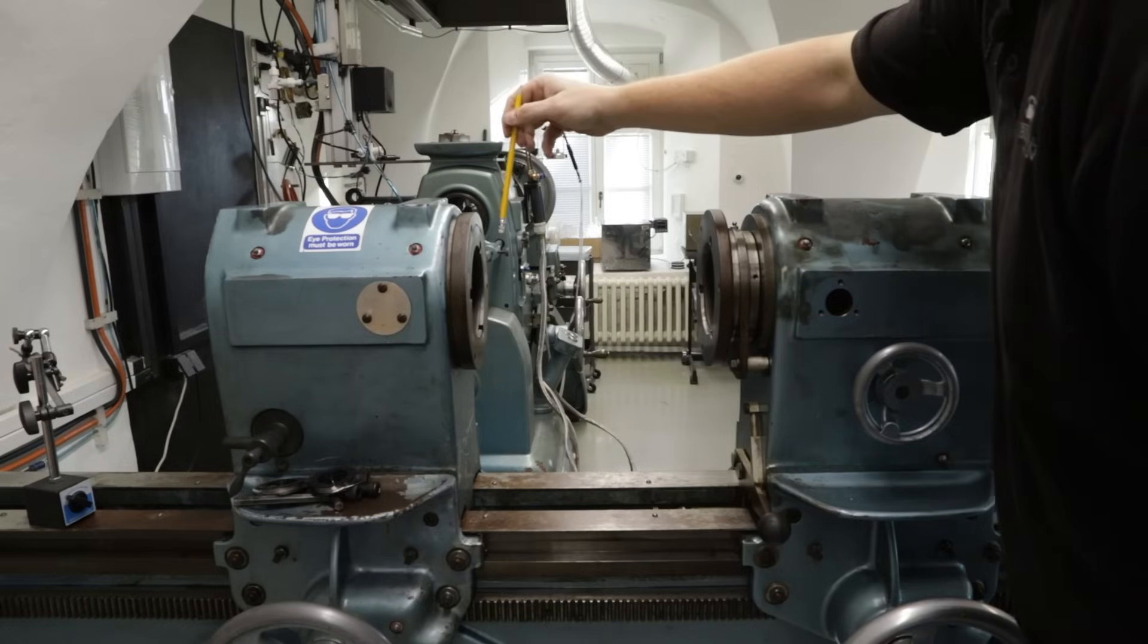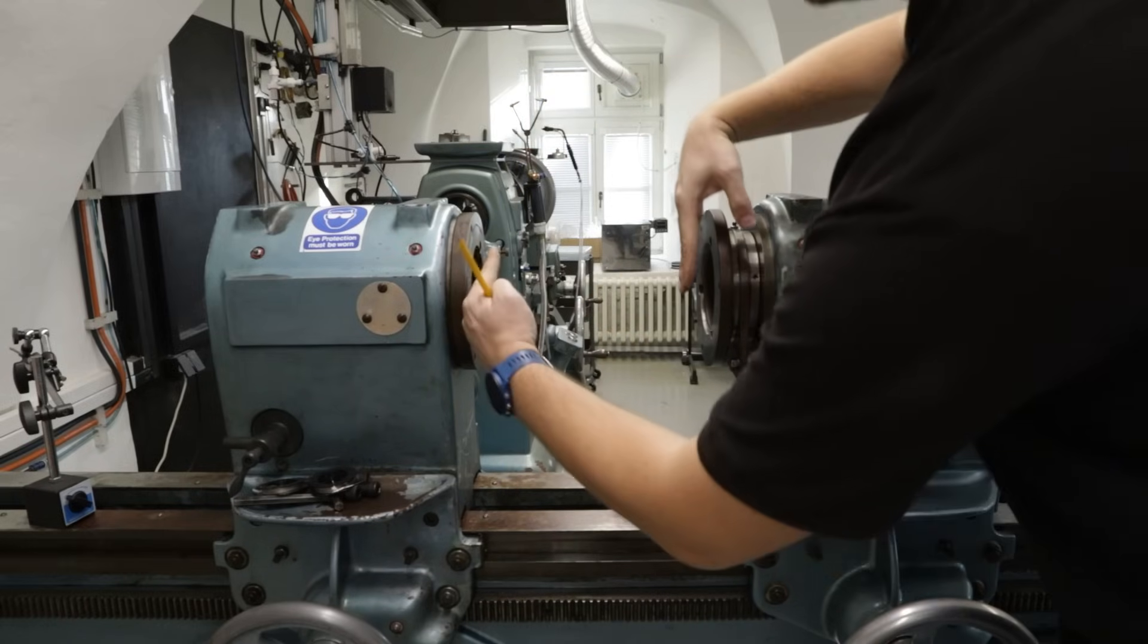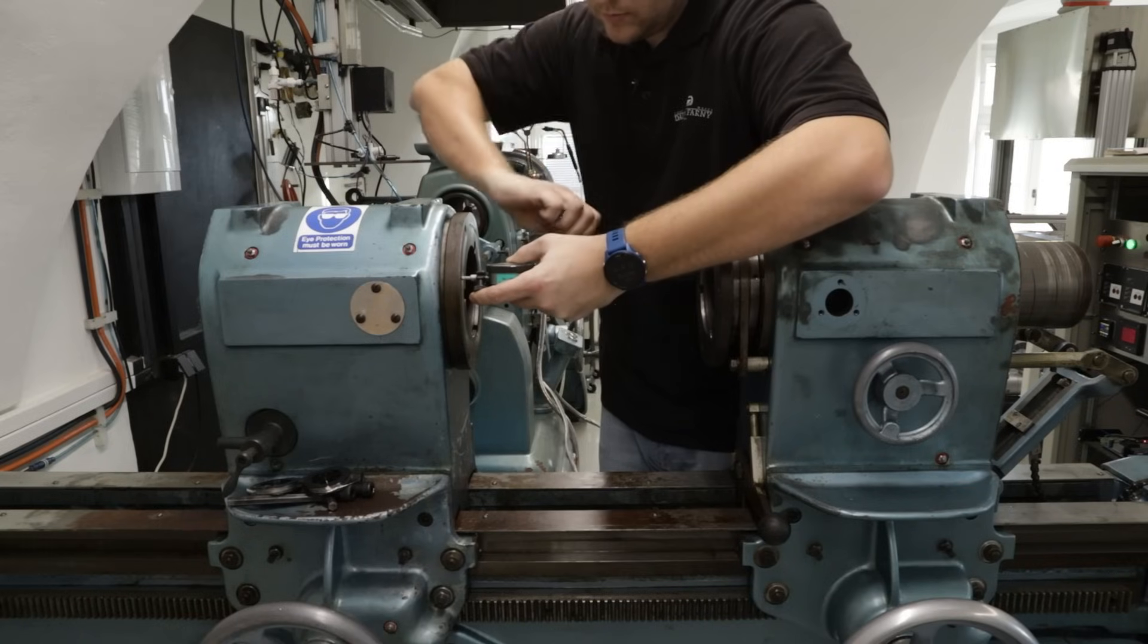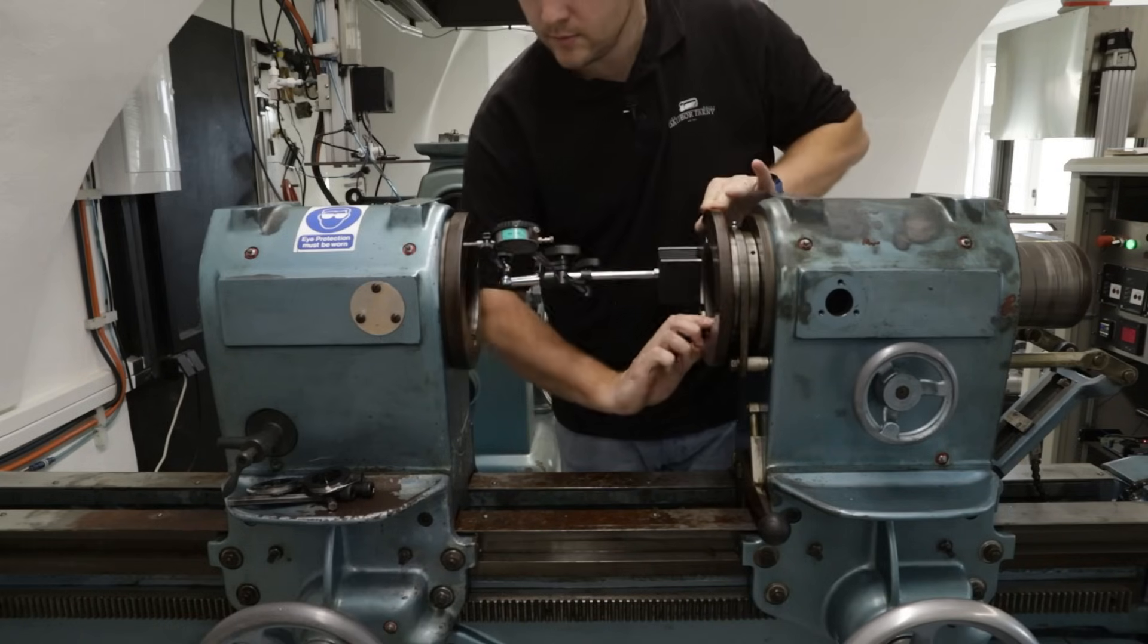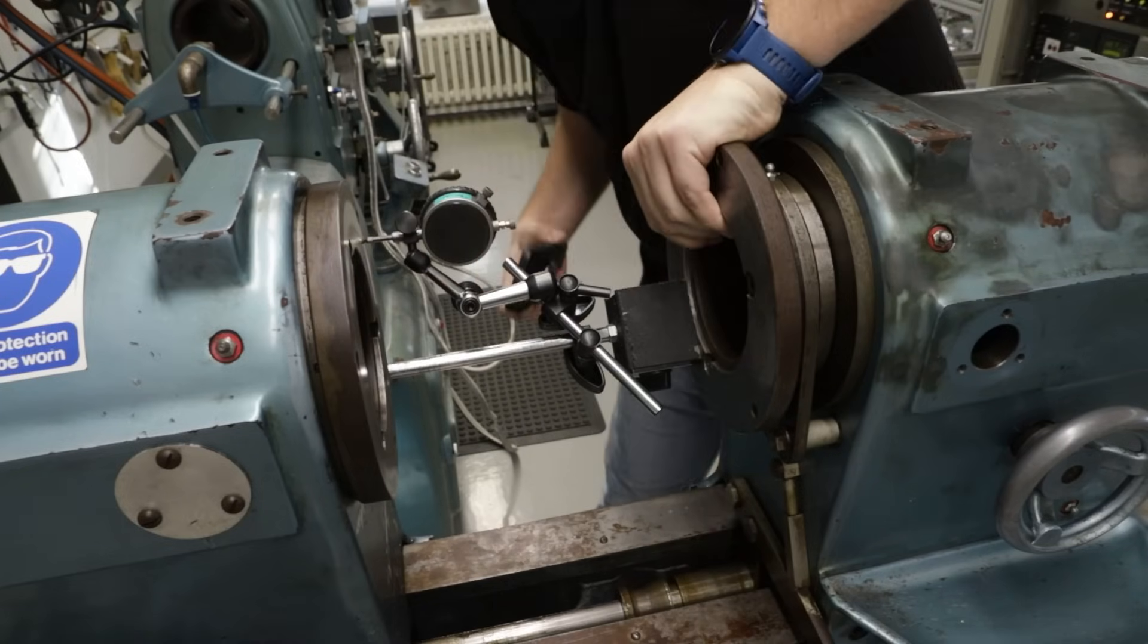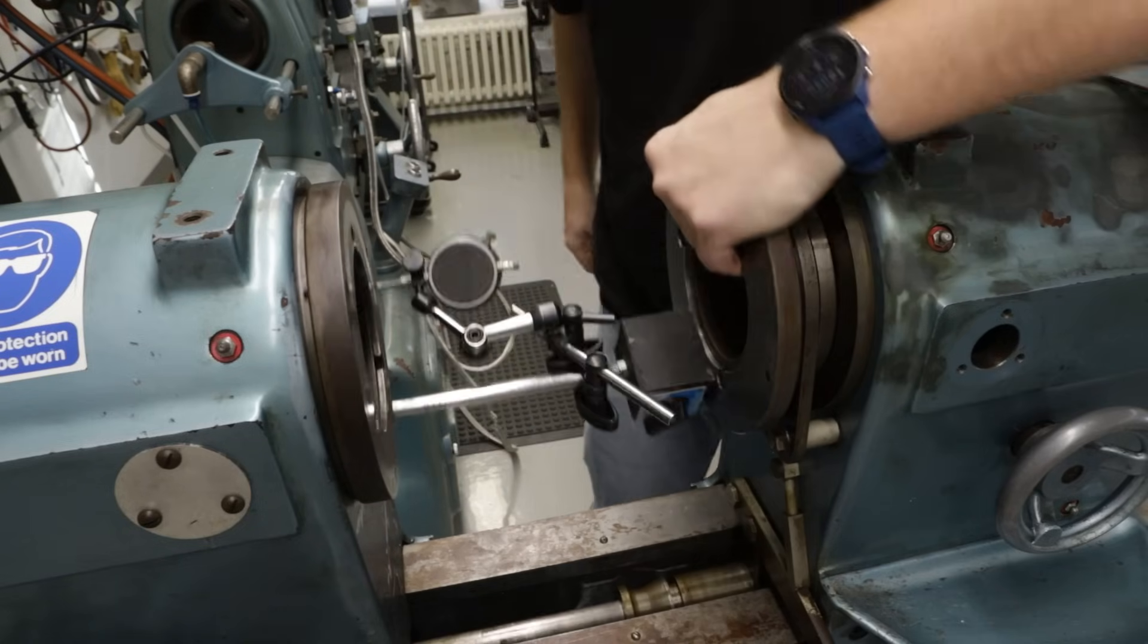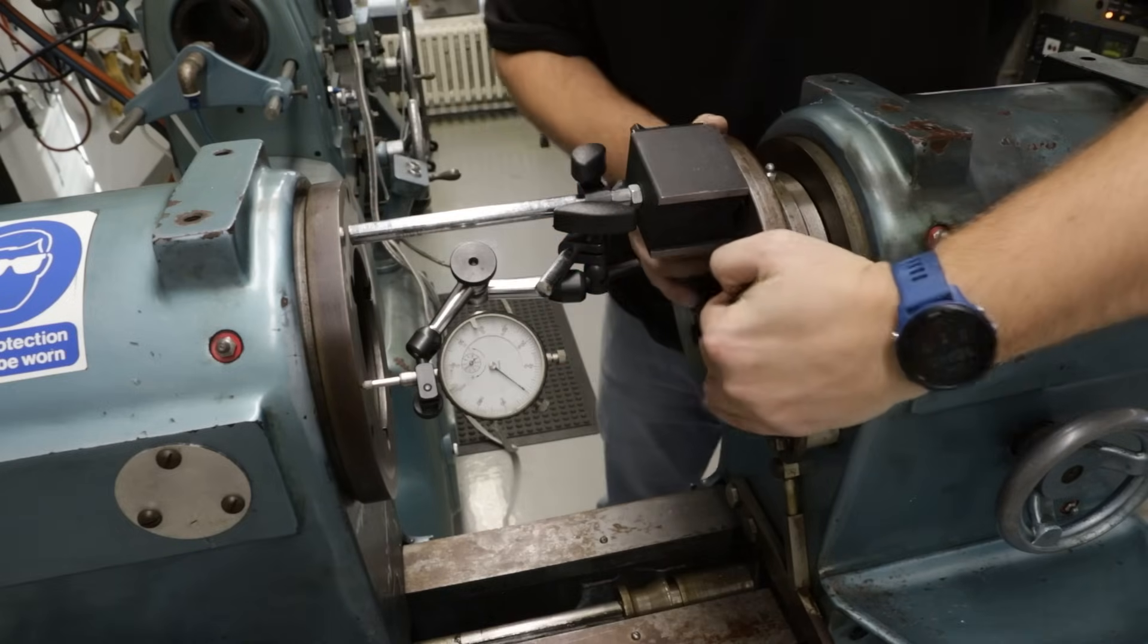So we now know that the runout of each of the spindles relative to the bed is quite small. But what is the runout between them? The maximum value that I can see here is around one-tenth of a millimeter. We will see if this is a problem or not.